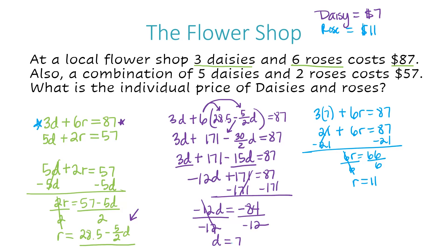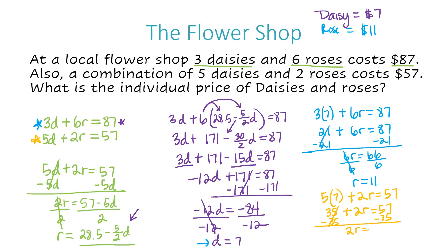Now I'll plug D equals 7 into the second equation to prove it doesn't matter which one you use. So five times 7 plus 2R equals 57. Five times 7 is 35, so 35 plus 2R equals 57. Subtracting 35 from both sides gives 2R equals 22. Dividing both sides by 2, I'm left with R equals 11. So there you have it — it didn't matter which equation you plugged it into; you get R equals 11, meaning roses cost $11 either way.